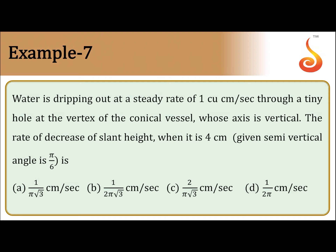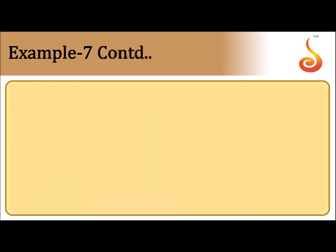Water flows through a tiny hole at the vertex of a conical vessel whose axis is vertical. We need to find the rate of decrease of slant height when it is 4 centimeters, given the semi-vertical angle is π/6. We draw the cone — this is the cone given to us, and this is the tiny hole through which water is coming out.